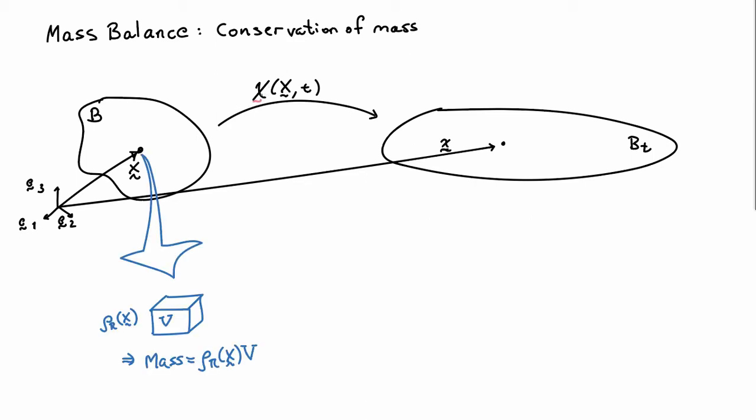So now if I zoom in at this point capital X and look at a small chunk of material of volume V, it will have some kind of density. We'll call that ρR. So that's the reference density of the material at that point. And if I multiply that density by this volume, assuming the volume is small, I'll get the mass of this little bit of material here.